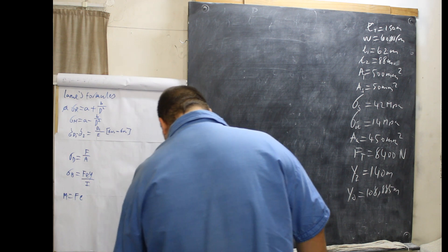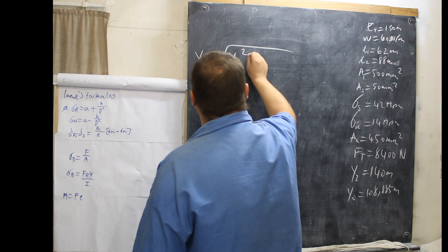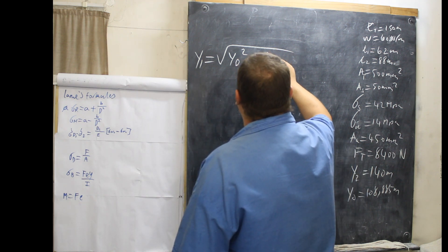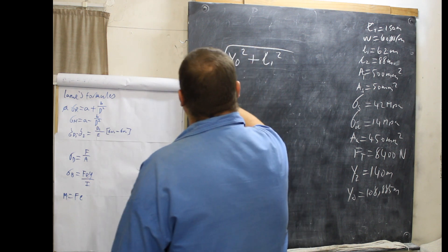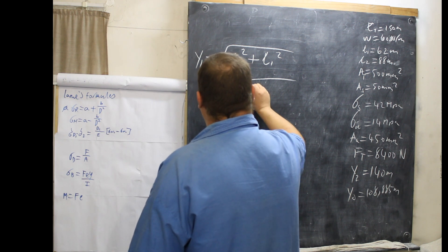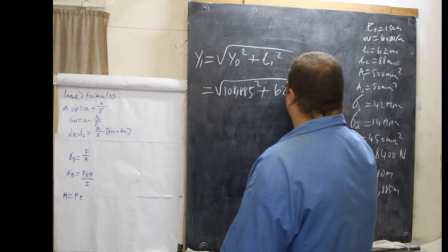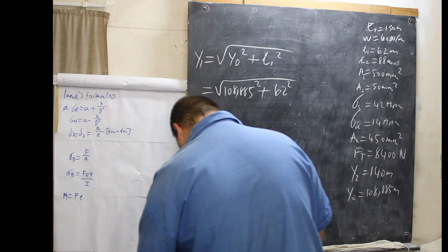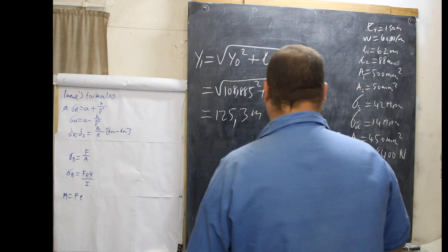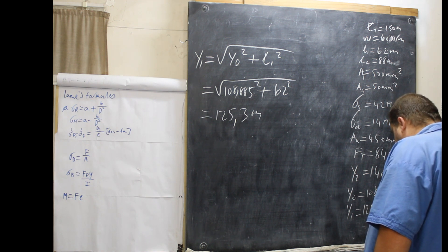Now we work out Y1. Y1 equals the root of Y0 squared plus L1 squared. So Y1 equals the root of 108.885 squared plus 62 squared, which equals 125.3 metres.